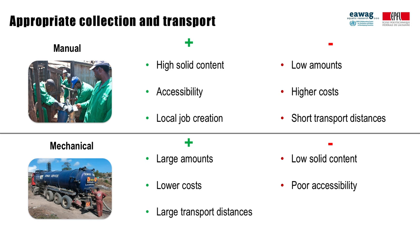In summary, different sludge collection and transport technologies have different opportunities and challenges. Based on sludge characteristics, economic status of the customer, access and transport distances that can be covered, it is up to you to select one or several technologies for your neighborhood or city. Manual collection and transport technologies can collect sludge with a high solids content, such as from pit latrines, and can access narrow lanes. However, these technologies commonly only collect small amounts of sludge, and transport of this sludge to a treatment plant can be a challenge. This can result in the discharge of the collected sludge into the urban environment.